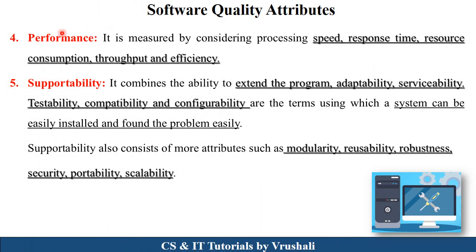Next is performance. Your product's performance is measured by speed, response time, resource consumption, throughput, and efficiency. For example, when you use WhatsApp, it opens within a second and you can send a message within a second — there is good response time, good speed, and good throughput and efficiency. This is called performance.